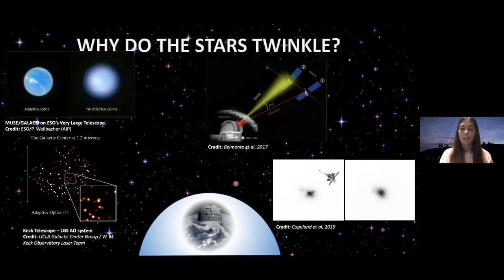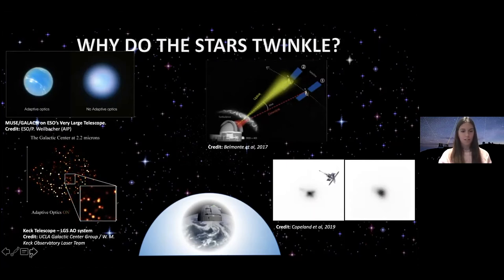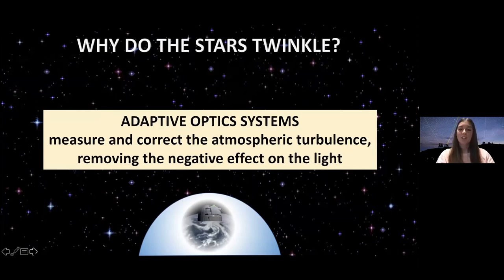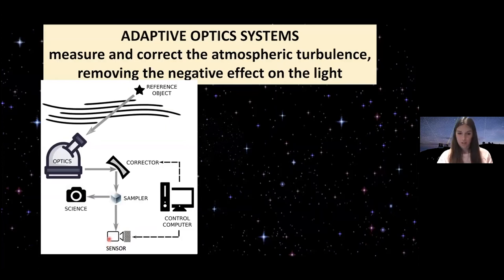In order to do that, we need what we call adaptive optics systems. These are systems that measure and correct the atmospheric turbulence and remove the negative effect on the light. We have our telescope capturing light from a reference object in the sky. This light travels through the atmosphere, gets perturbed by atmospheric turbulence, and goes to our wavefront sensor. This sensor measures the atmospheric turbulence, sends this information to a computer, and the computer sends commands to a corrector element in the form of a deformable mirror, which changes its shape to adapt to the perturbation that we are measuring.